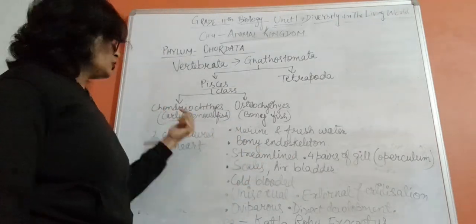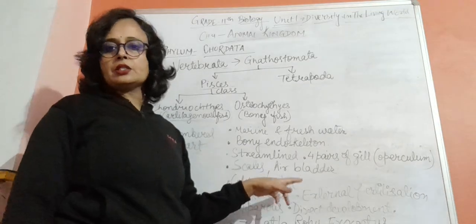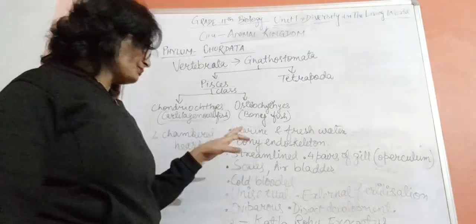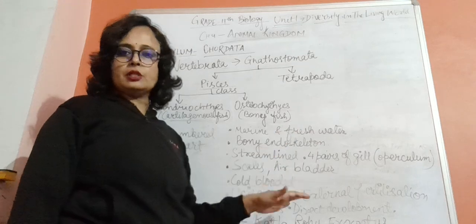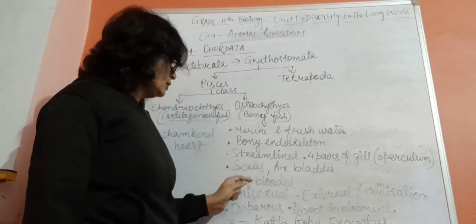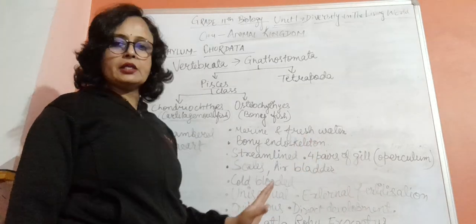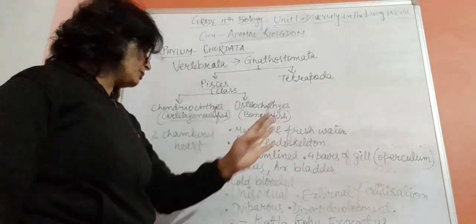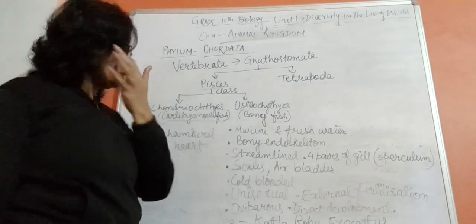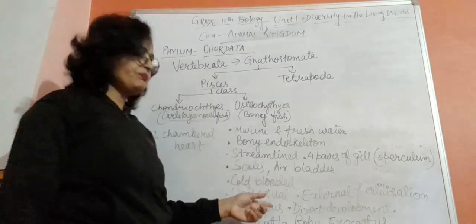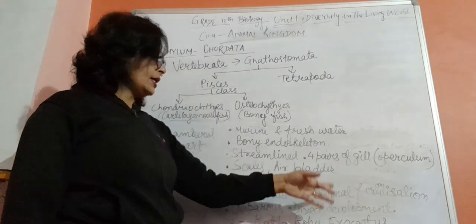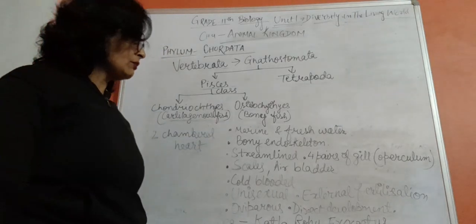They are cold-blooded like Chondrichthyes, meaning they can't maintain body temperature. They are unisexual - male and female are separate. External fertilization occurs in water. They are mostly oviparous with direct development, meaning no larval stages - fish develop directly from eggs. Examples: Katla, Rohu, Exocoetus.